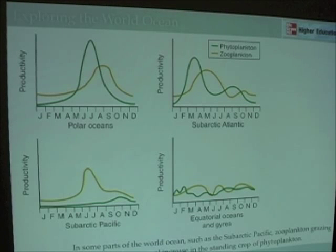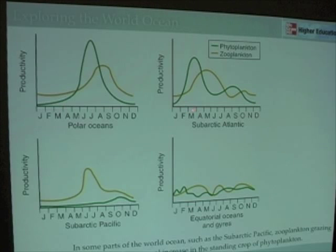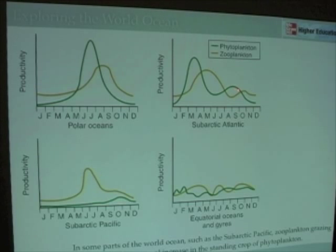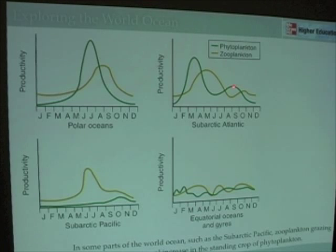Let's start with the subarctic Atlantic. Phytoplankton grow, increase in abundance, and reach a peak somewhere in March or April. They decrease in abundance in May, June, and July, and pop up again a little bit in September, then decrease through the winter months. So here we have phytoplankton increasing in abundance in the spring, decreasing through the summer, increasing a little bit in the fall, and being very low in concentration in the wintertime.